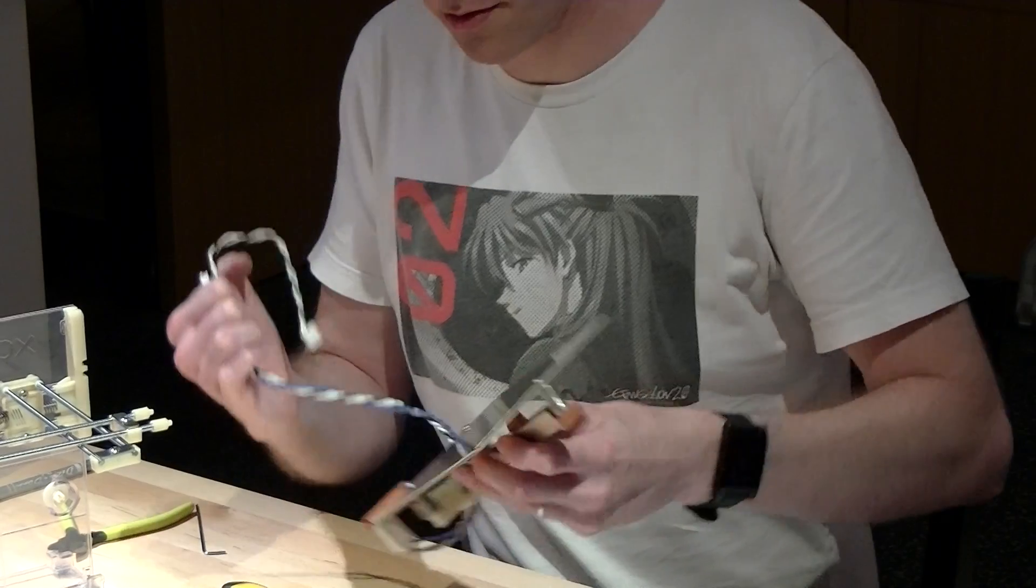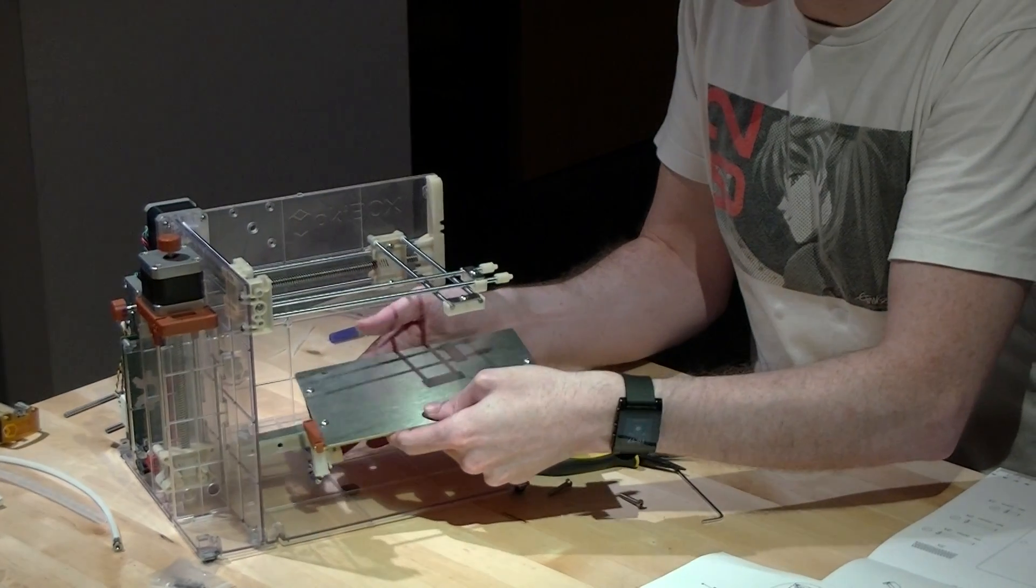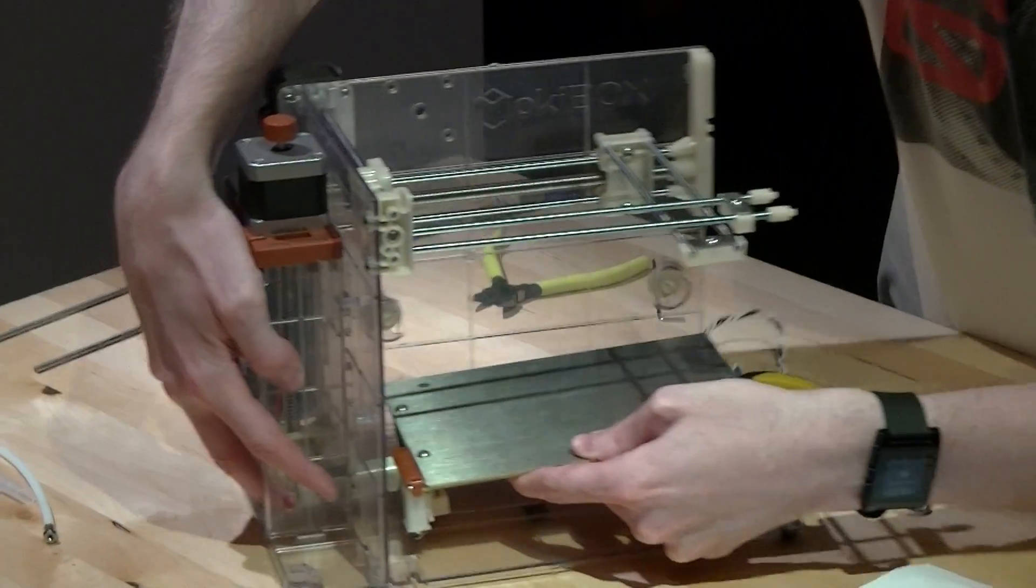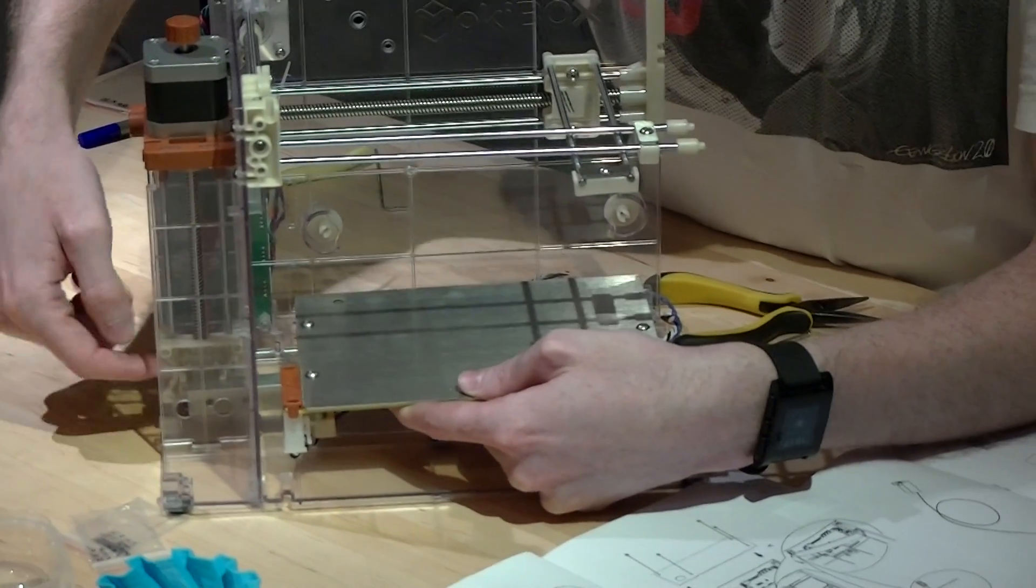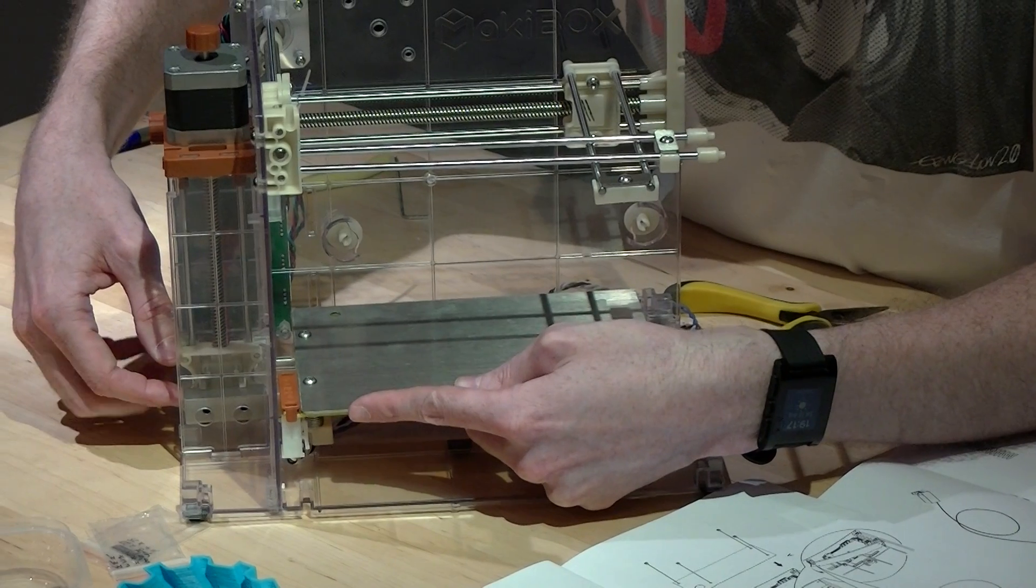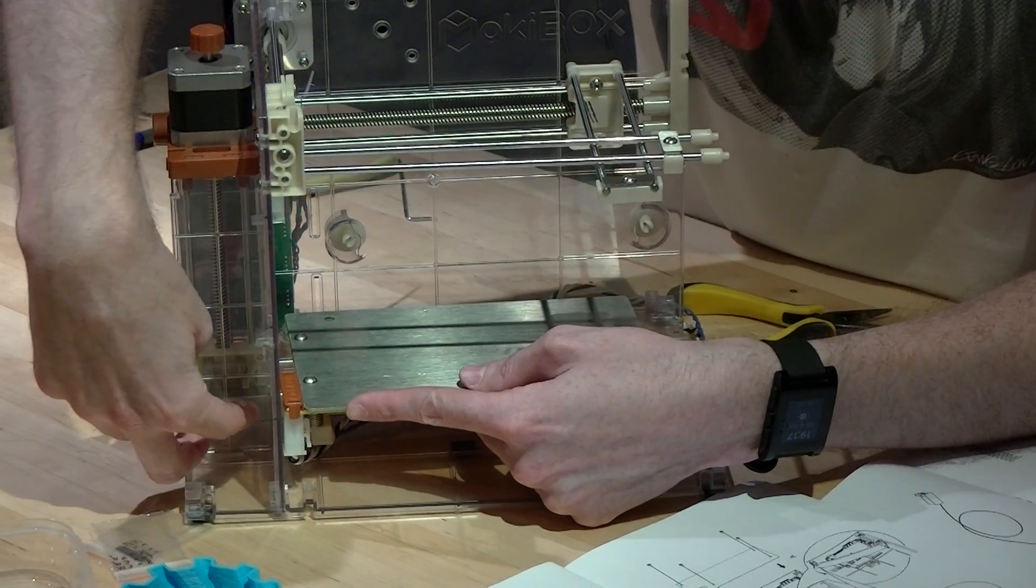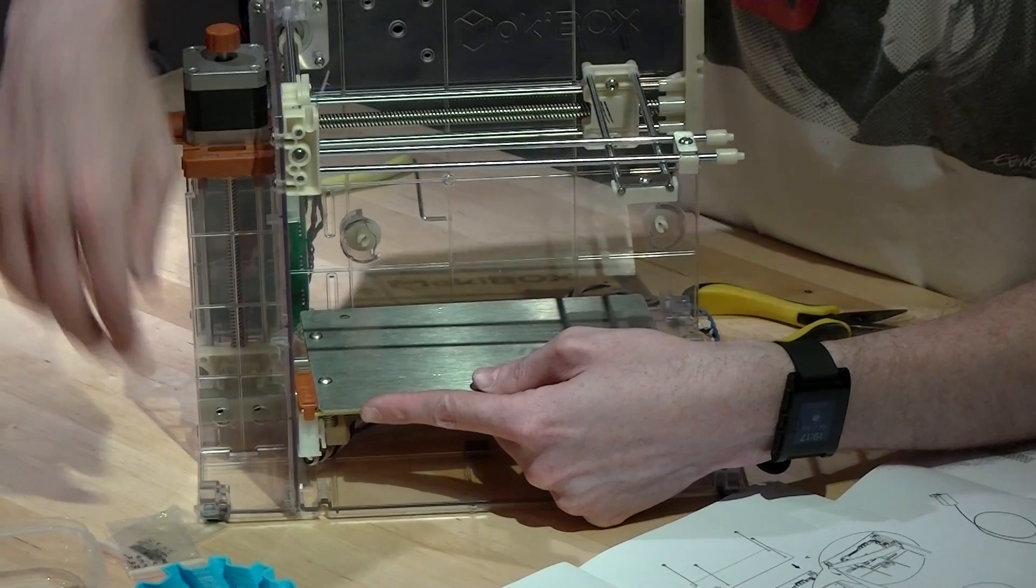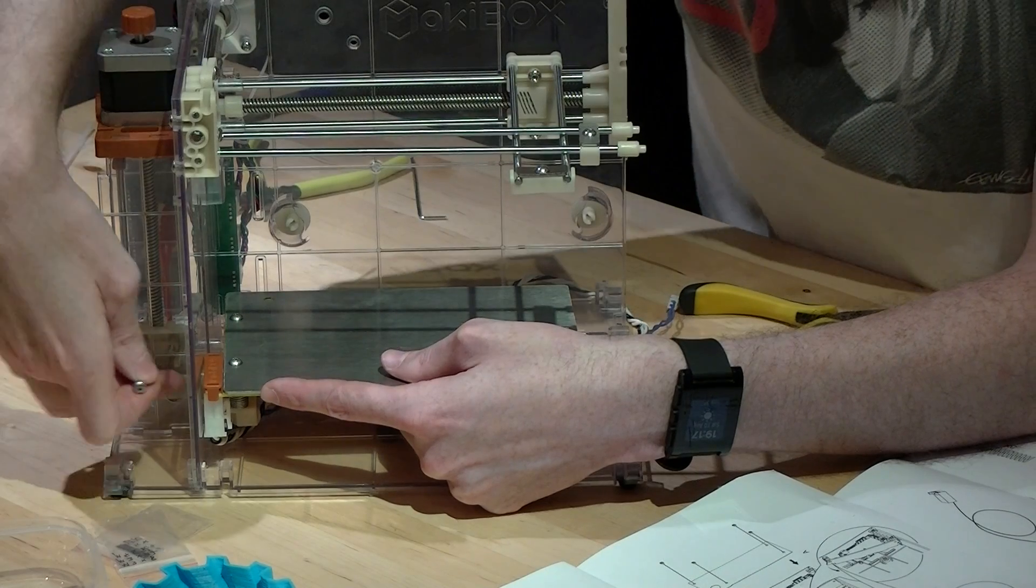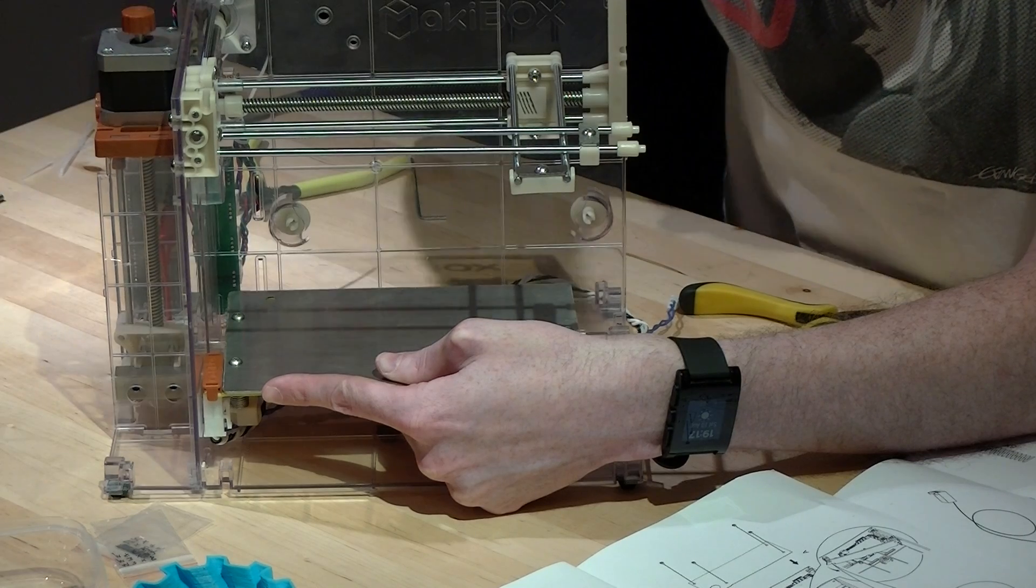And then slide your bed. You can probably just see they fit underneath the little tabs on the drive block for the C-axis. So, once you get it in place, you should be able to get the two 25mm screws through these holes, through the rod, and into the drive block, and then screw it on.